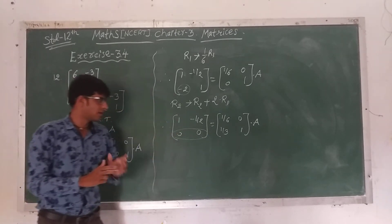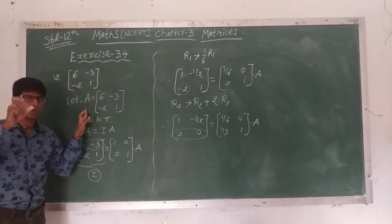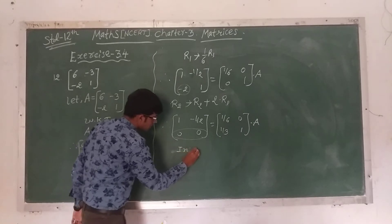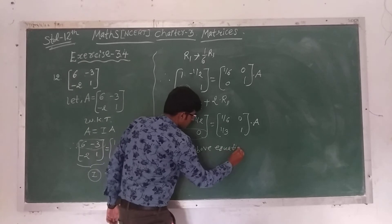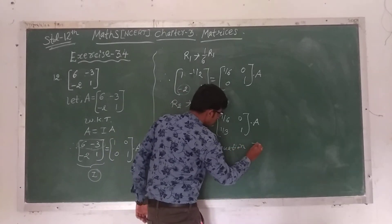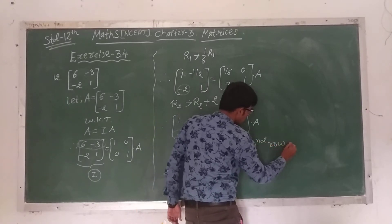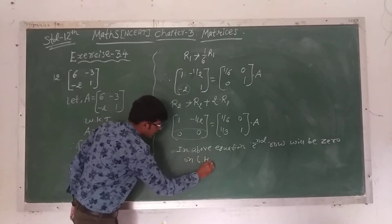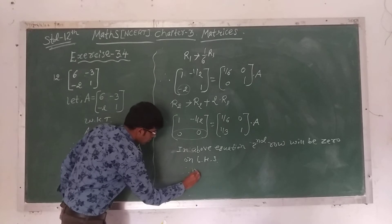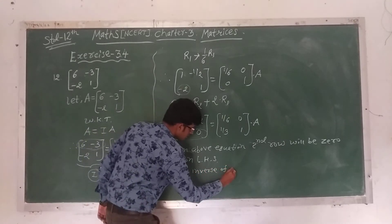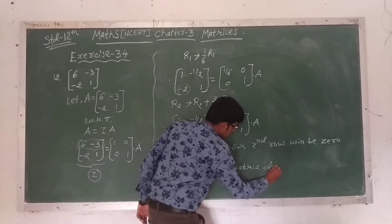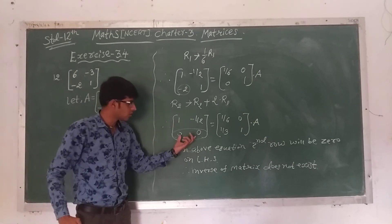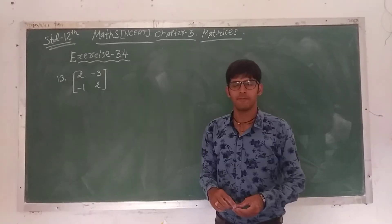The second row on the left hand side is all zeros, meaning the inverse of the given matrix A does not exist. In the above equation, the second row will be 0 on the left hand side. Therefore, inverse of matrix A does not exist.